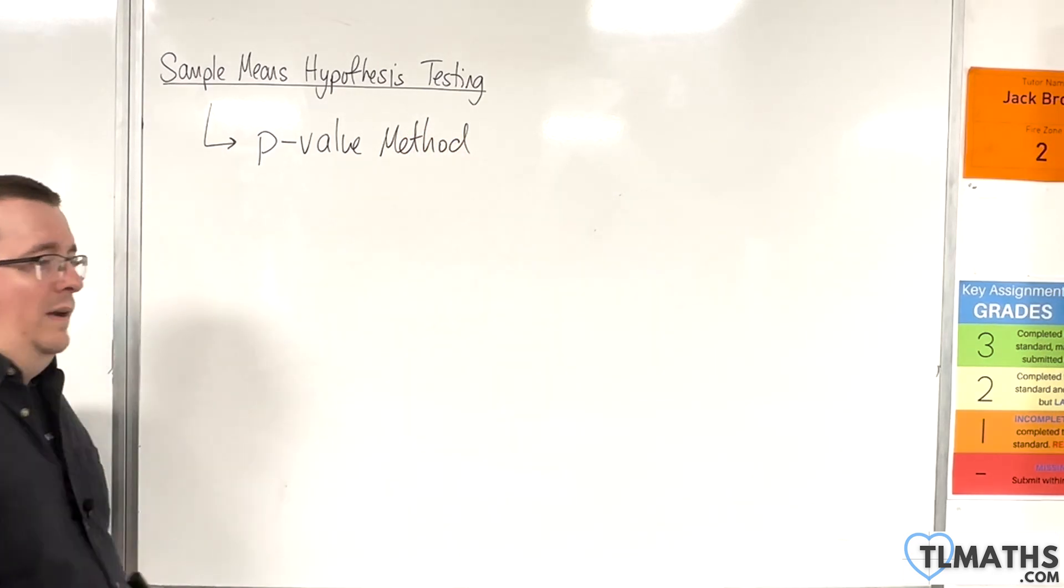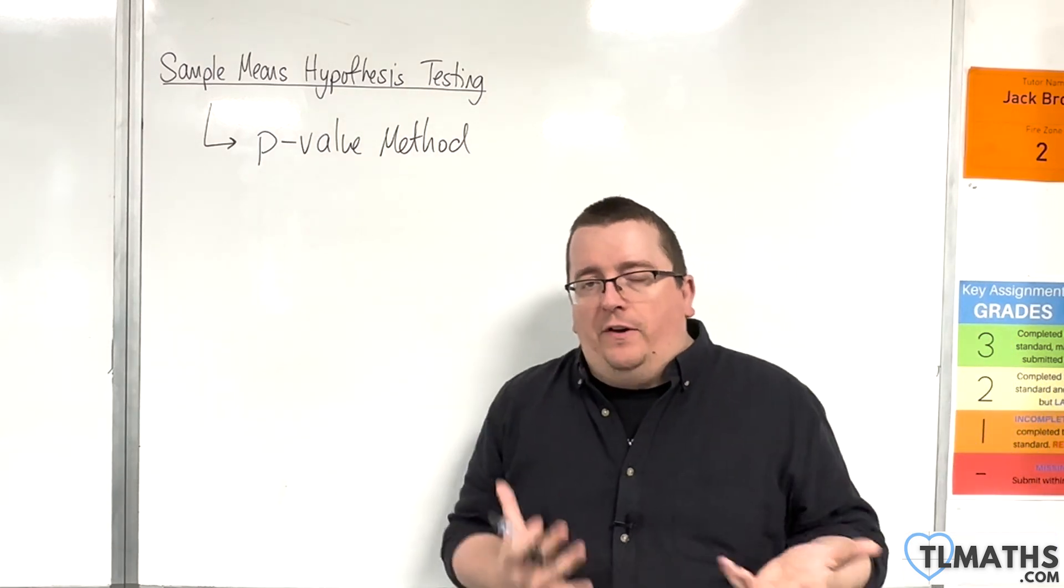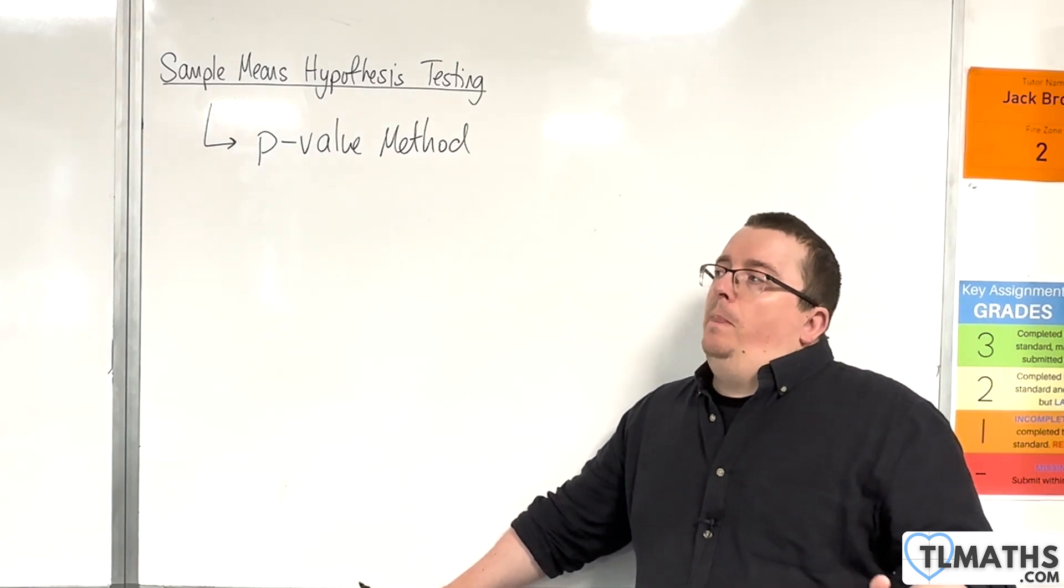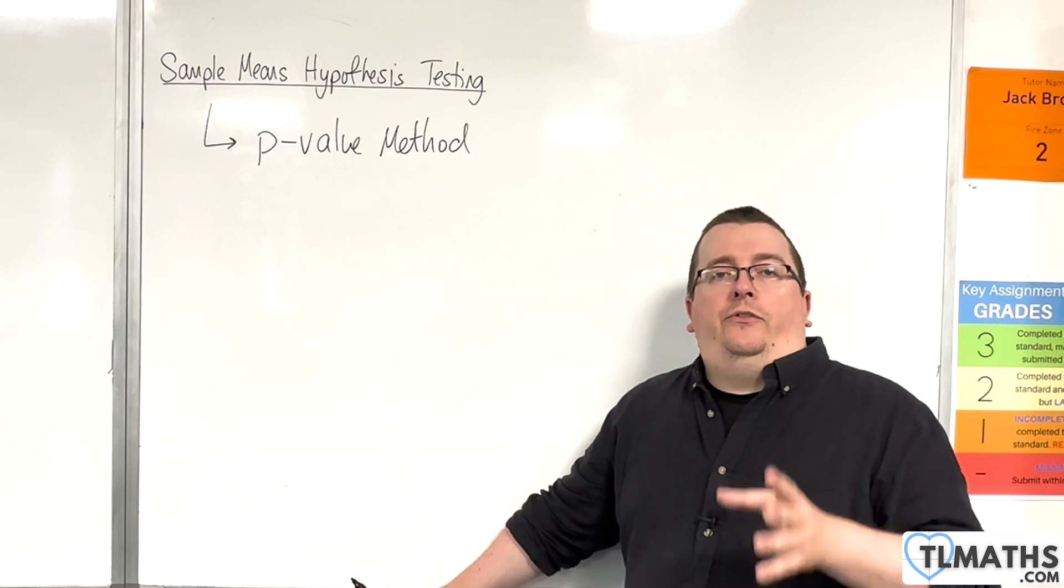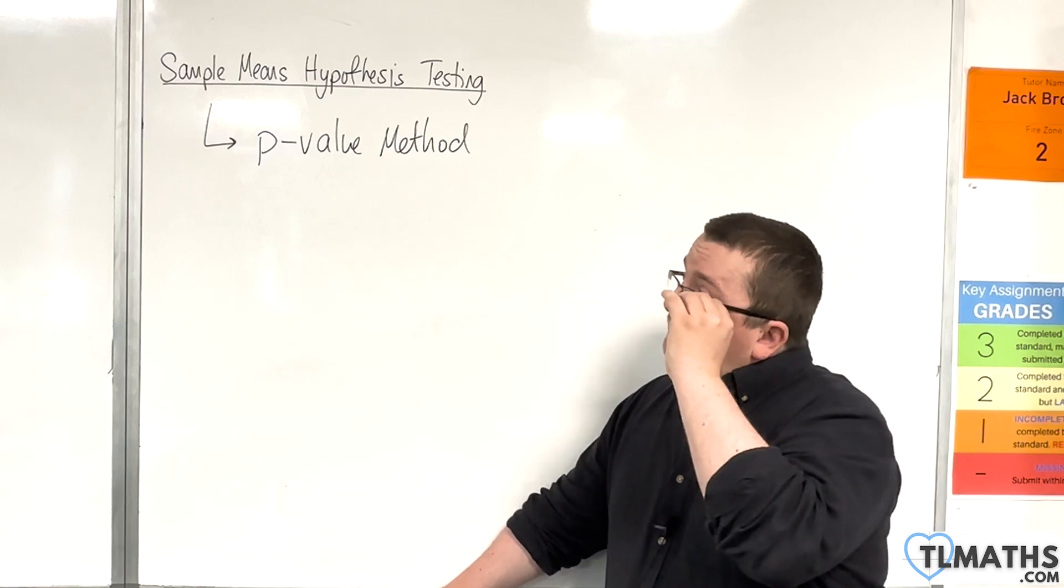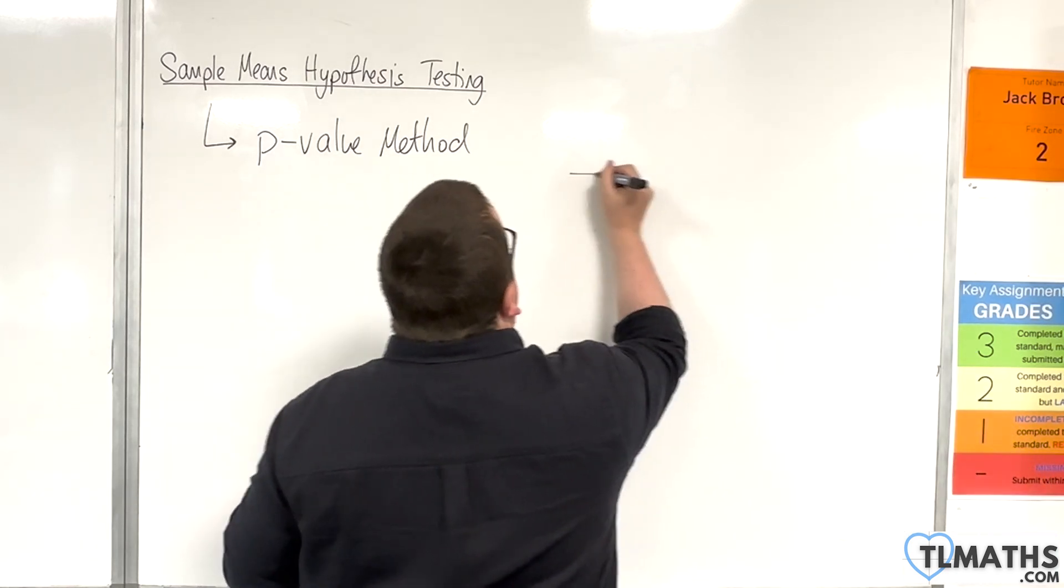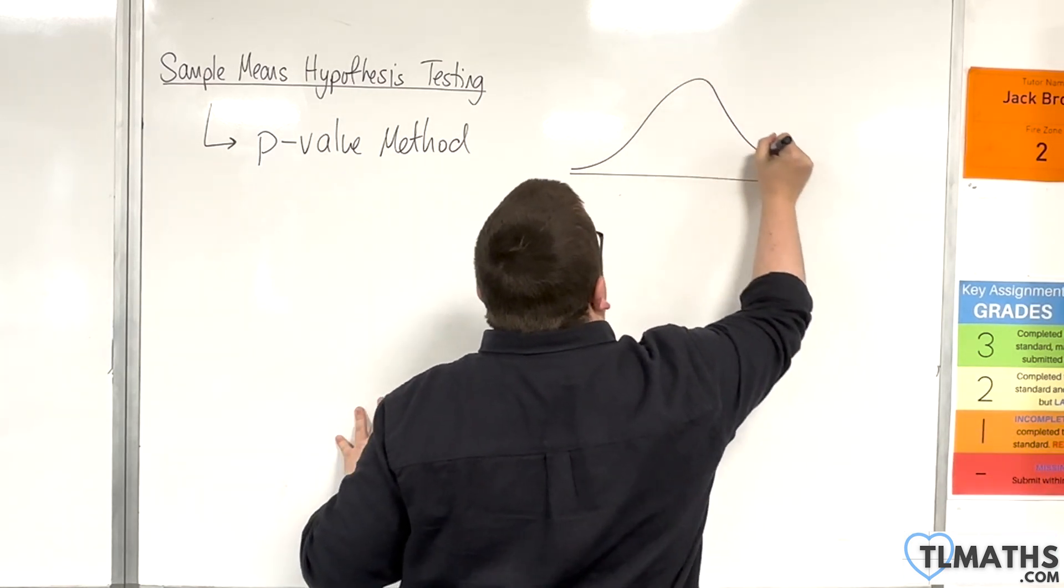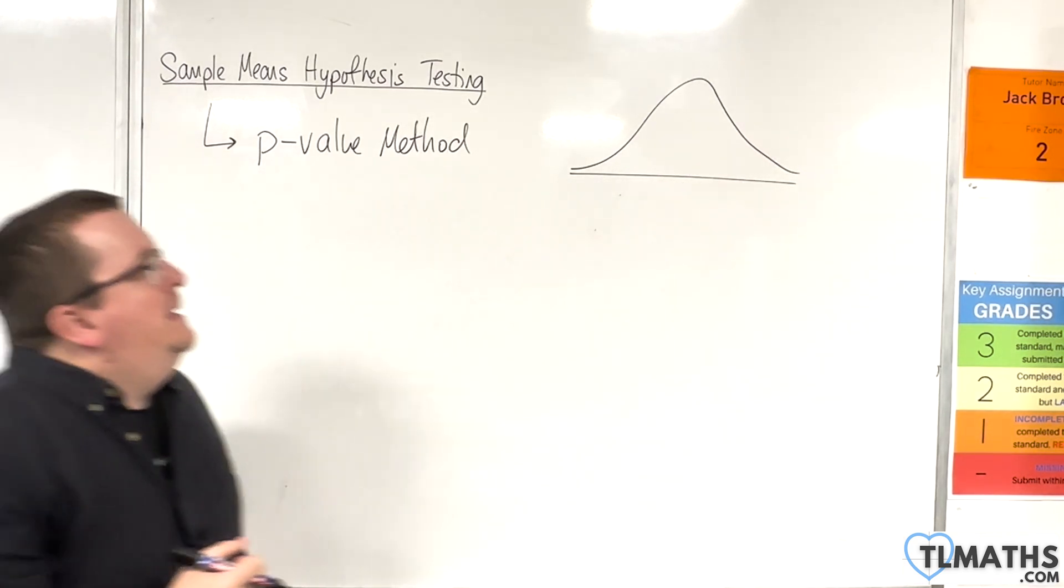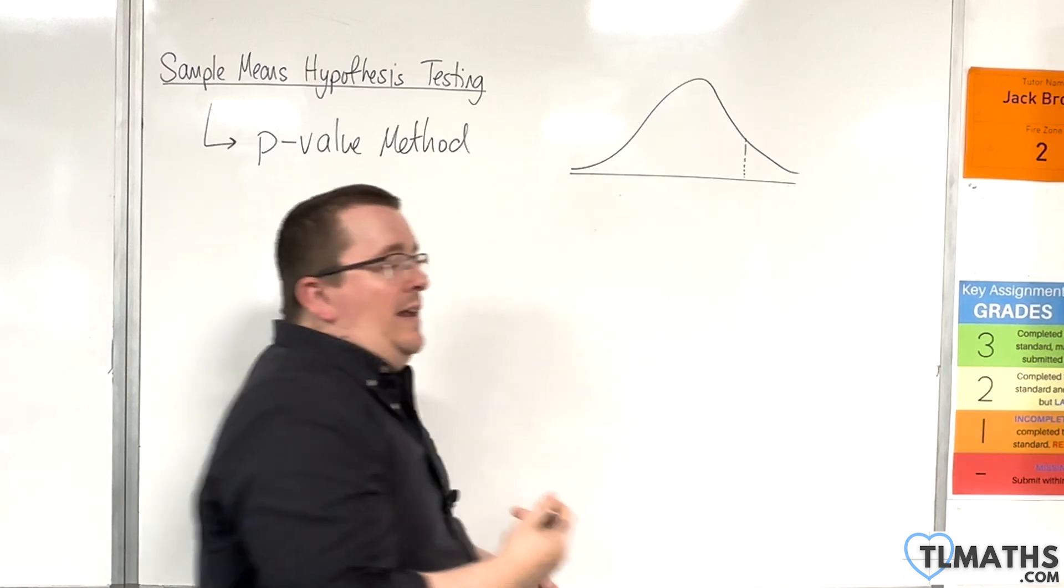Now, I'm not going to be going through a whole exam question here, but I'm going to give you a rough idea of how this works first. And then, when I start going through examples, I will do all three methods so you can see how those modifications happen. So, the p-value method. How does that work? Well, the idea is that here is your normal distribution.